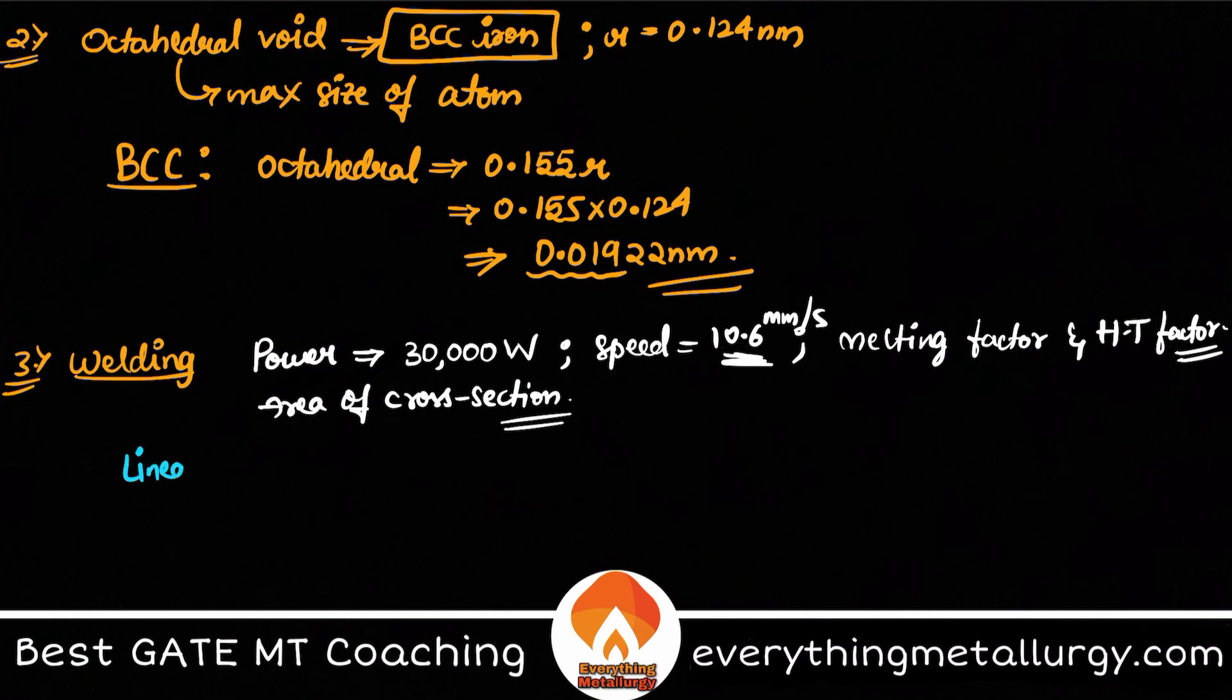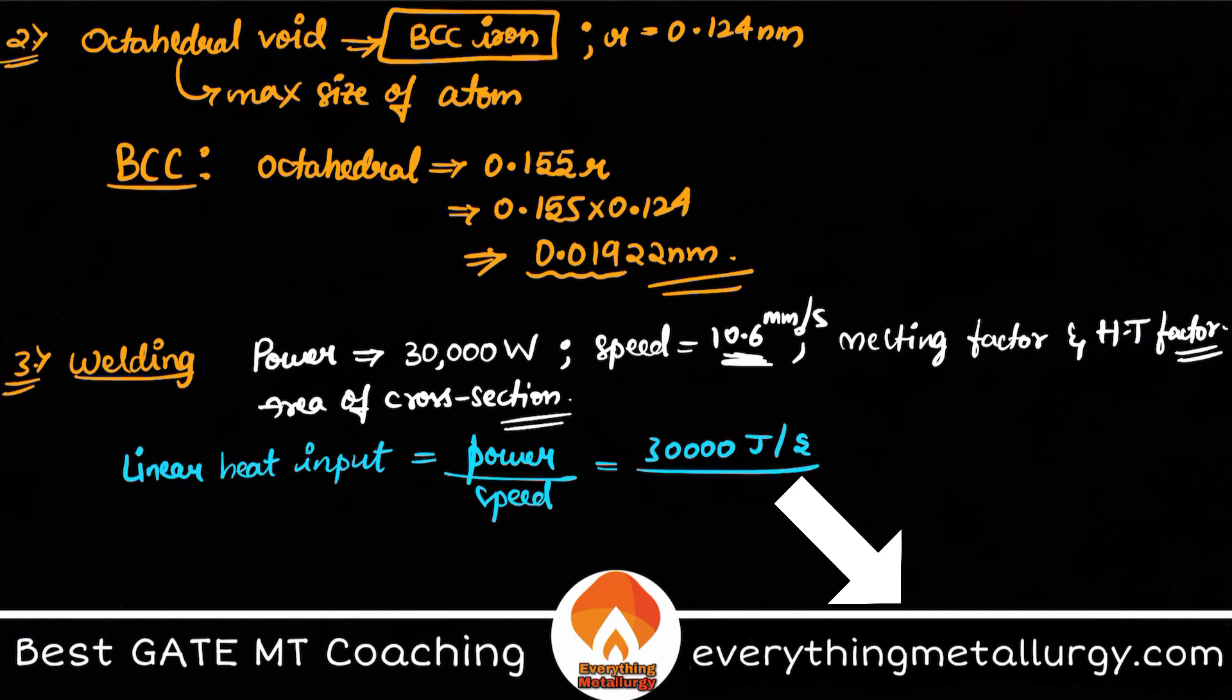We have something called as linear heat input. This explains how much heat is actually transferred or generated onto the body. This is equal to power by speed. So here this is 30,000 watts, which is joule per second, divided by 10.6 mm per second. So the seconds cancel. From here you will be getting some value in joule per mm. And also you have been given some volume. They gave the overall power utilized in joule per mm³.